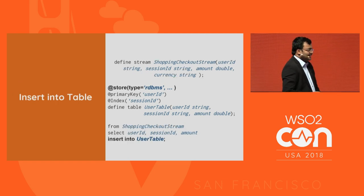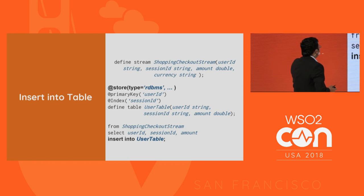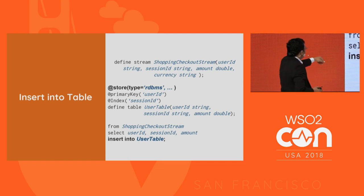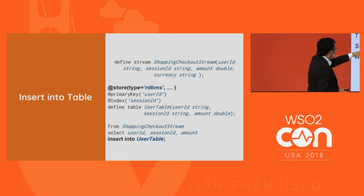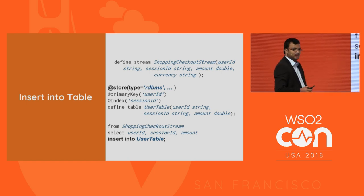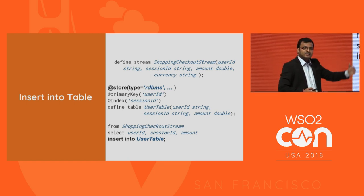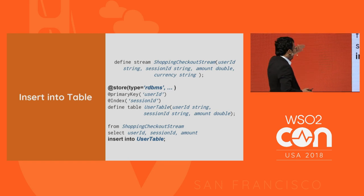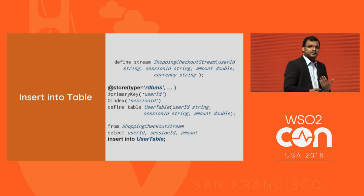Here is a simple query for data store integration. From the shopping checkout stream, we select user ID, session ID, and amount and insert them into the user table — which communicates directly with the external database. Similarly, you can perform deletion, update, insert-or-update, and all standard database operations.